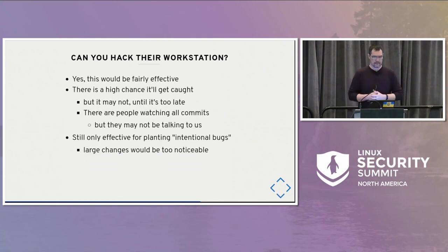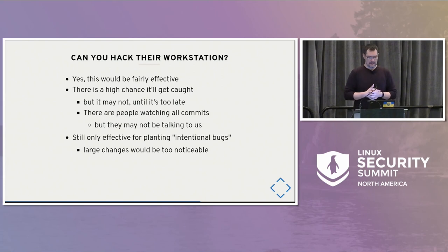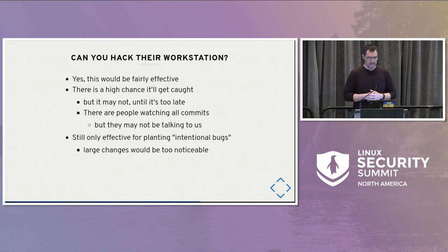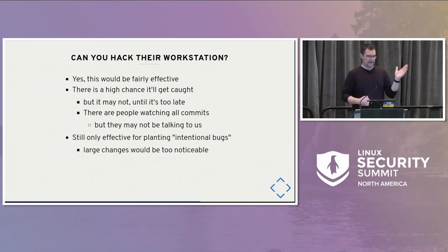For example, hacking their workstation would be fairly effective. There's still a high chance that people reviewing git commits will notice something that comes out, but it will probably be caught only when it's too late. Like I said, people are watching git commits and may not be talking to us. It's still only effective for planting an intentional bug. If you try to sneak in complex backdoor code doing more than just privilege escalation, there will just be too much code and it will almost certainly stand out. Even the developer or maintainer themselves will notice that something weird is happening.